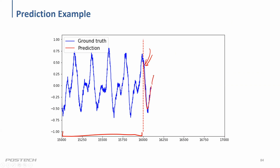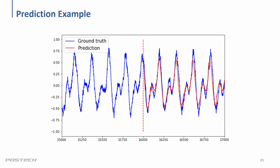What if you want to predict more than 100 data points? Based on the data, you predict the next 100 (the red values). Then use those predicted values to create another input sequence and predict again. As you can see, the further the prediction gets from the original data, the worse the accuracy becomes.